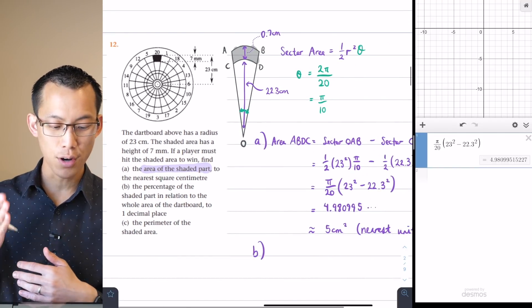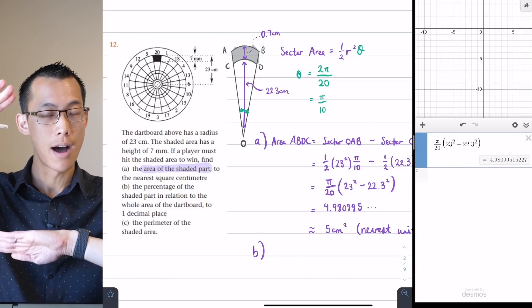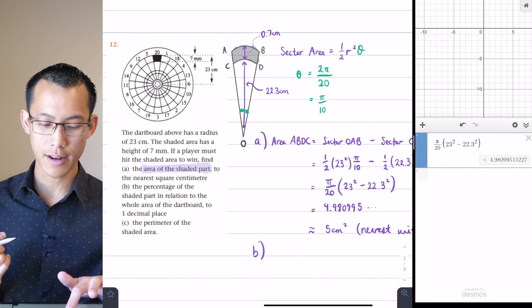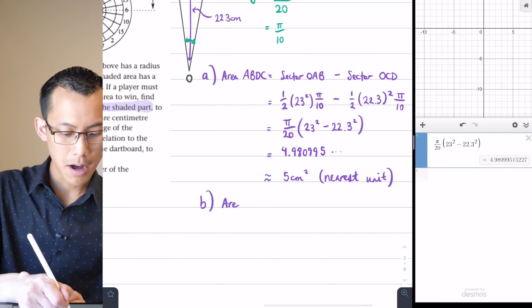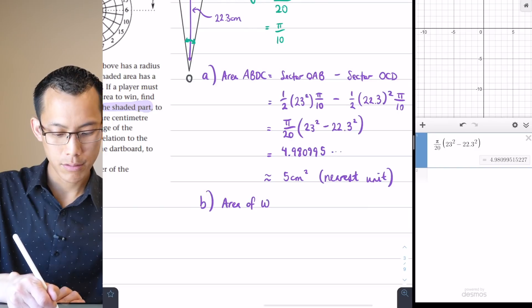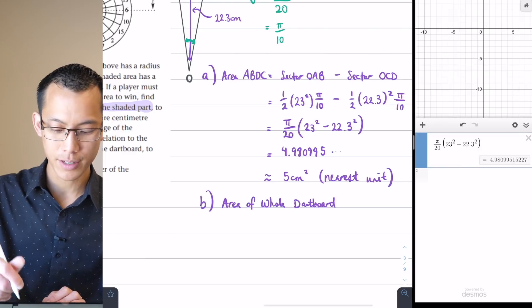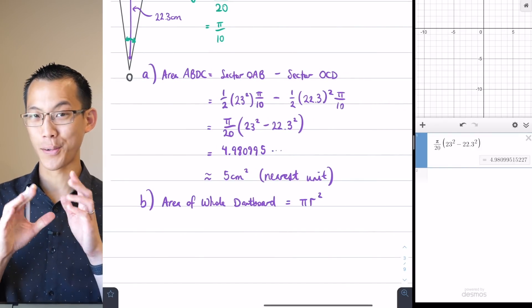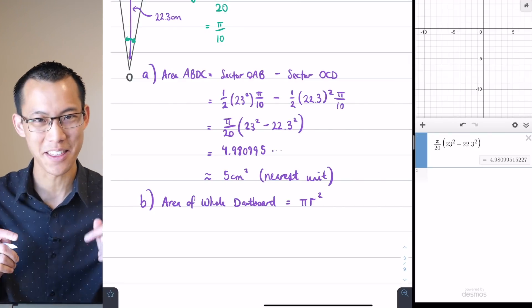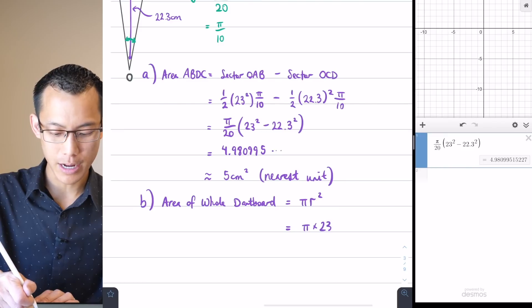So part B says, what is the percentage of the shaded part in relation to the whole area of the dartboard? And that whole area of the dartboard, which we're going to obviously need to calculate, that's something which I think will help us with our sense check. The percentage of the shaded part in relation to the whole area is just the shaded part divided by the whole area. So let's work out the area of the dartboard. This is a nice easy formula, of course, pi r squared.